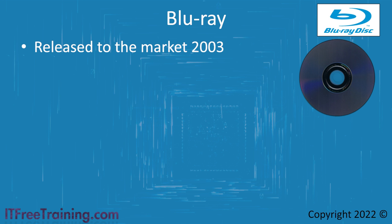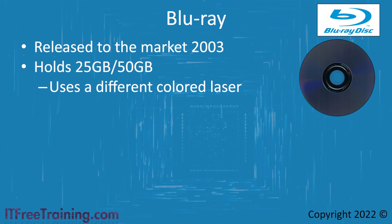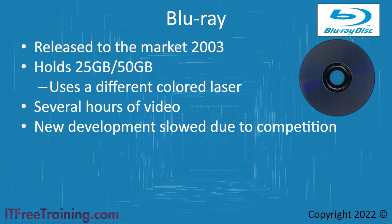The next technology is Blu-ray, which was released to the market in 2003. It increased the amount of storage to 25 gigabytes, or 50 gigabytes if dual layer was used. In order to do this, Blu-ray uses a different color laser — blue in color, and thus the name Blu-ray. Using a different colored laser changes the frequency, allowing more data to be packed on the disk. Having more data on the disk means that several hours of video can be stored, including higher resolutions like 4K. Development of Blu-ray has been slow due to competition, and the shift to storing data online has decreased the need for high-capacity disks. There are, however, more improvements that can be done to increase the amount of data stored on Blu-ray disks.